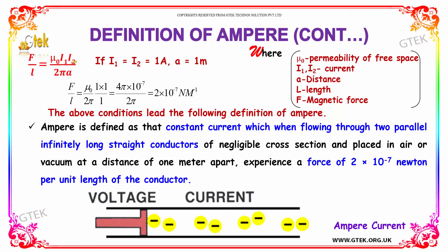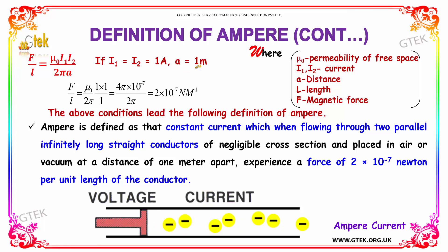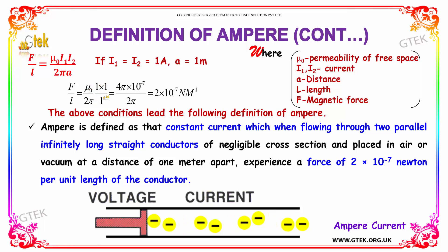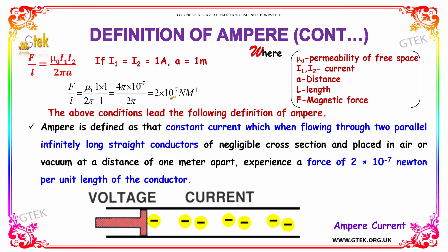Considering if I1 and I2 are equal, which is equivalent to 1 ampere, and A, the distance, is 1 meter, substituting these values gives F by L equal to μ₀ by 2π into 1 into 1 by 1. With μ₀ equal to 4π into 10 to the power minus 7, you will be getting the answer as 2 into 10 to the power minus 7 newton per meter.